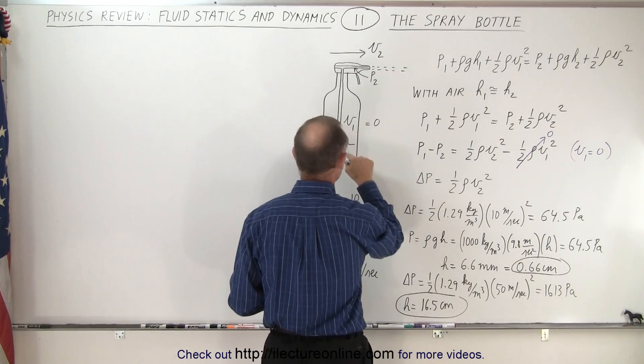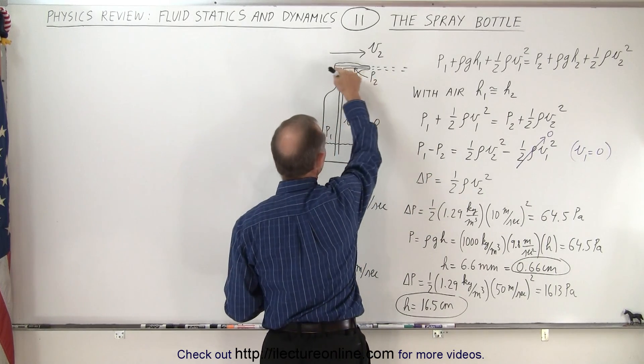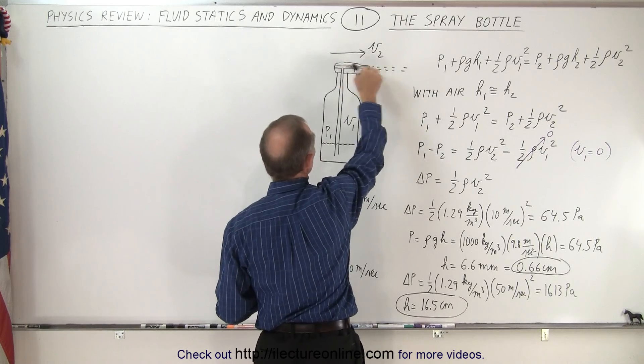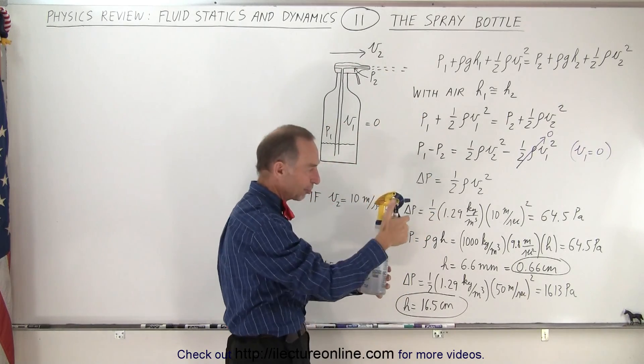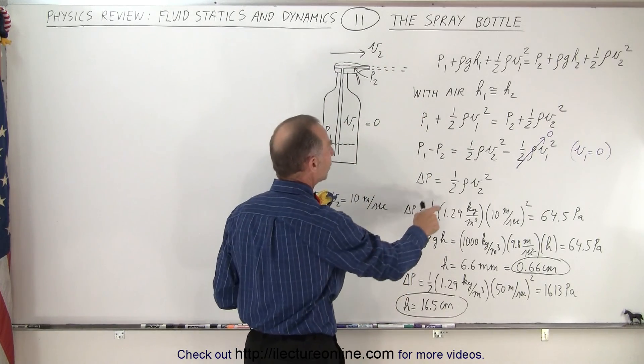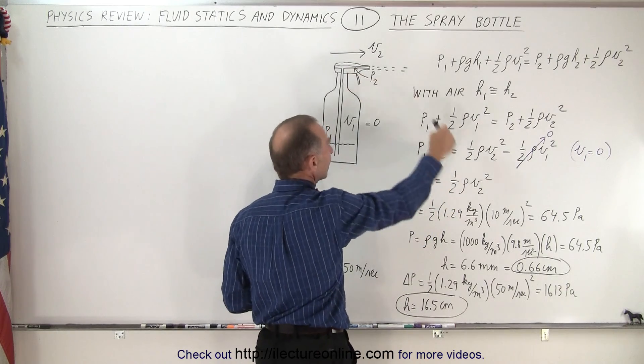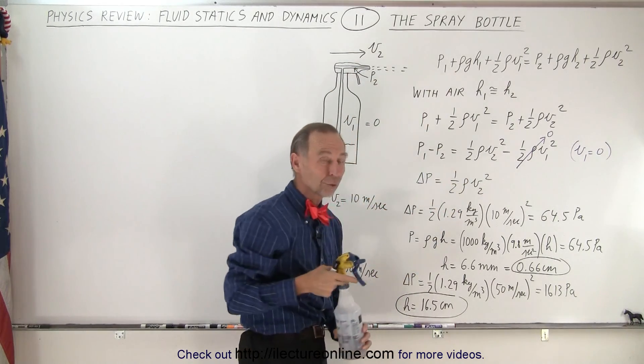So essentially, the difference in pressure between inside the bottle and the pressure inside the little tube through which the air is forced by pushing on the handle here, that will be equal to one half the density of the air times the velocity of the air going through the tube.